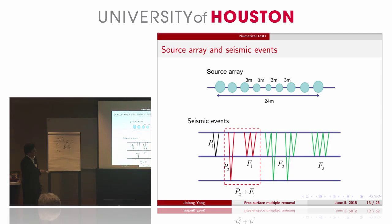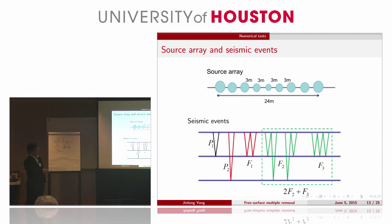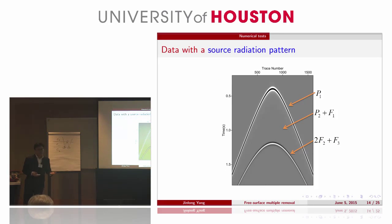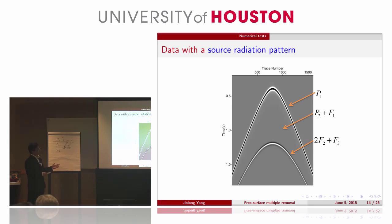I will label it as the second primary and the first first-order free-surface multiple. These three events are interfering. I will label this as 2F2, and this is the receptor multiple. This is our data we generated. As we can see in our data, we can only see the first primary, and there is another event — it's a multiple — but we do not know if it's first order or second order; we have no information about it right now.